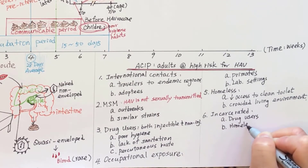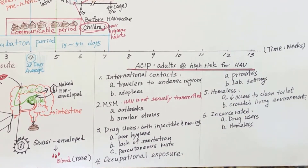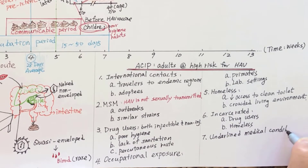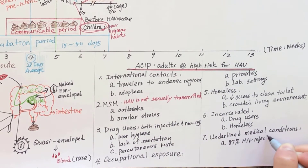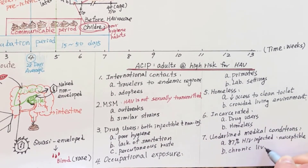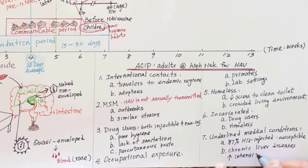These two groups over-represent the incarcerated population. People with underlying medical conditions are a concern: 87% of HIV-infected patients are susceptible to hepatitis A viral infection. Chronic liver disease does not increase the opportunity for contracting hepatitis A, but it increases the intensity of liver inflammation or liver damage if the patient is infected with hepatitis A.